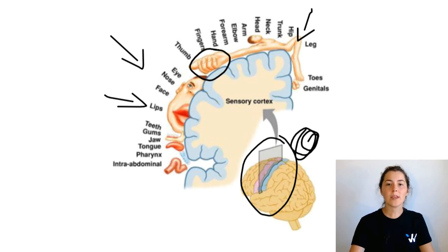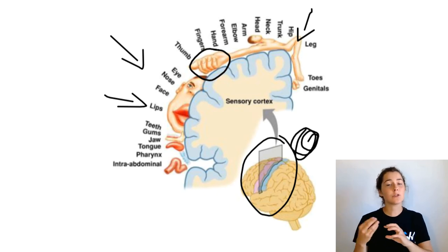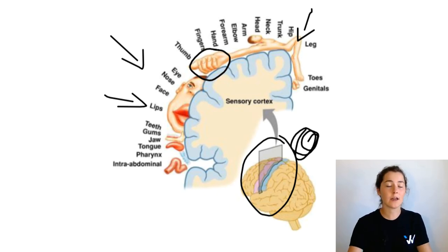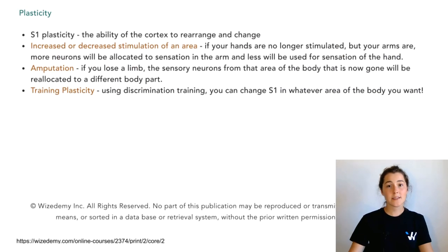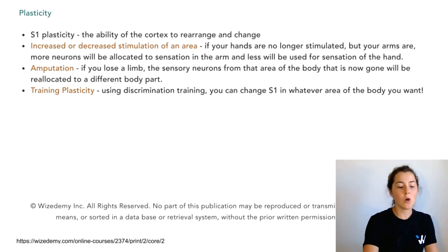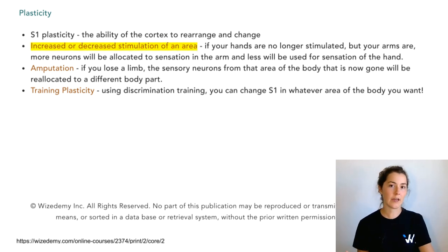Sometimes though we can have plasticity in this area of the brain. Plasticity means that it's able to change and adapt to different changes that we have within our body. Plasticity can happen because of three different stimuli. One is that we have either increased or decreased stimulation of an area.